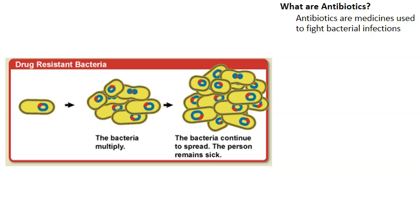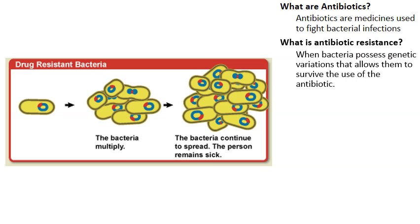Antibiotics sound wonderful, so what's the problem? The problem is antibiotic resistance — when bacteria possess genetic variations that allow them to survive the use of an antibiotic. The bacteria on the left is resistant to an antibiotic; it multiplies and its offspring multiply. Over time, an entire population of bacteria becomes resistant to an antibiotic, making it really hard to treat and cure the person.